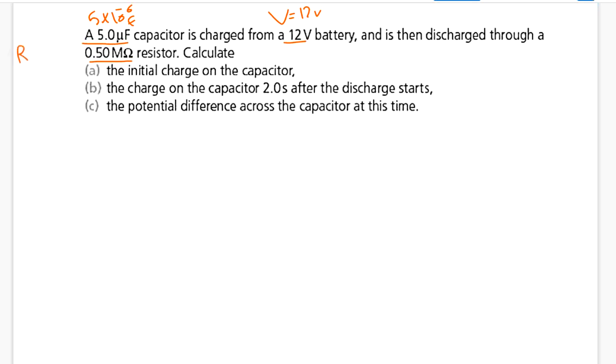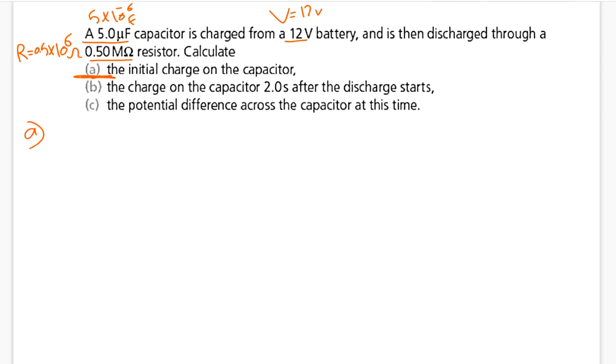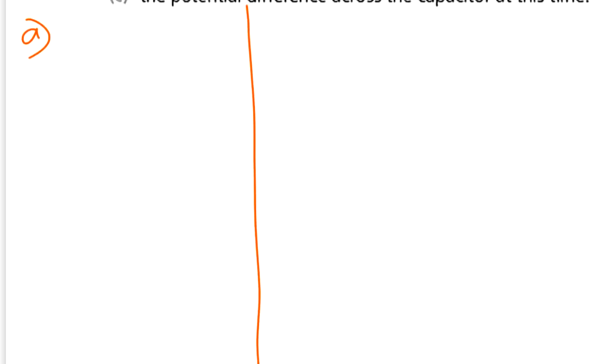This capital M means mega, so the resistance is 0.5 times 10 to the power 6 ohm. Remember, micro is negative 6, mega is 6. The question asks to calculate the initial charge on the capacitor.